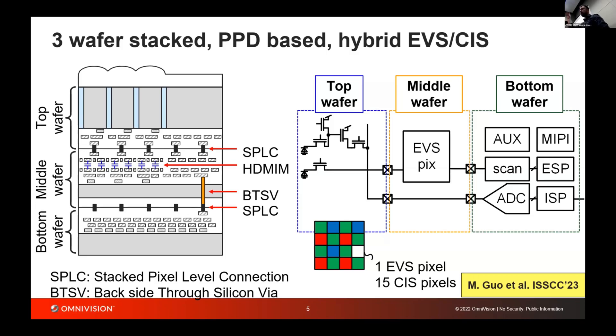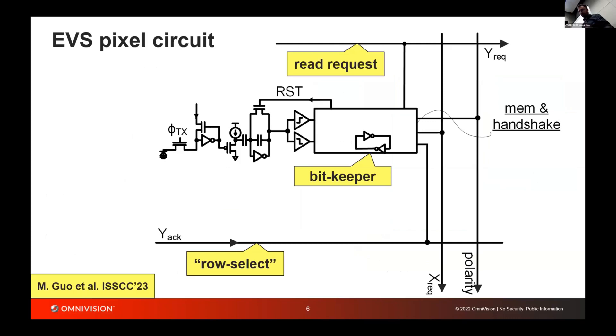The CIS pixel connects to the column bus and is connected to the peripheral circuit at the edge of the sensor. Here you can see a simplified schematic of our pixel circuit. It's pretty conventional. Photo diodes to the left, logarithmic amplifier, buffer to prevent from kickback, difference detector, comparators, and then a bitkeeper. So far, so good.